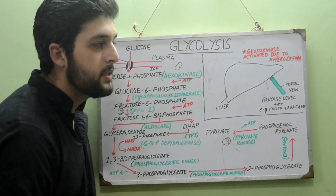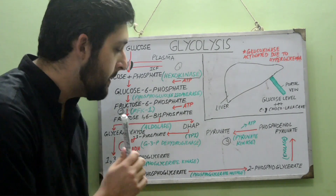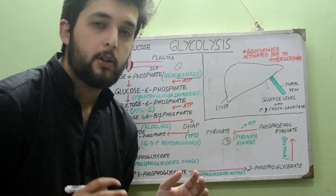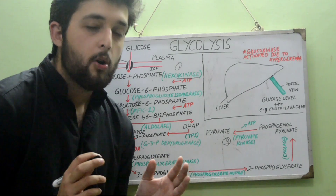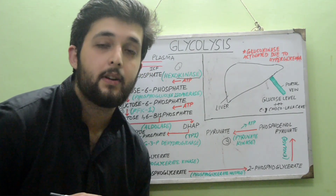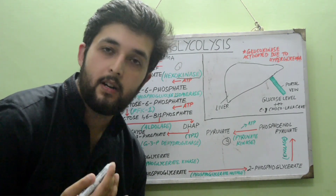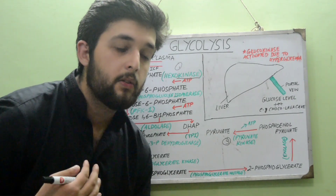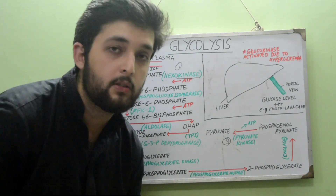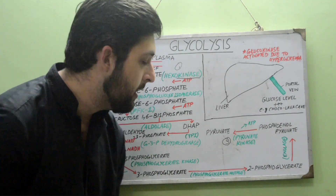In red blood cells, some of the 1,3-BPG is diverted to form 2,3-BPG. This is important because 2,3-BPG shifts the hemoglobin-oxygen dissociation curve to the right, decreasing hemoglobin's affinity for oxygen and thereby increasing oxygen delivery to tissues throughout the body.